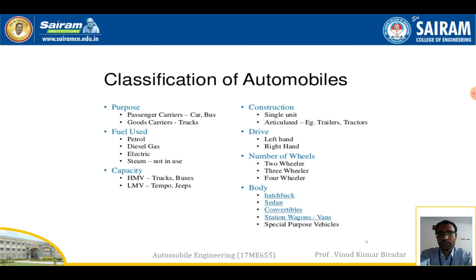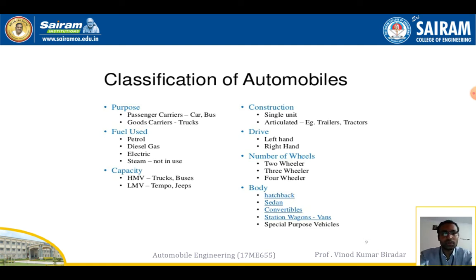The second classification is based on fuel used: petrol engine, diesel engine, electric, and steam engine. Based on capacity: heavy vehicles and light vehicles — trucks, buses, tempo, jeeps. Based on construction: single unit or trailer tractors. Based on drive: left-hand or right-hand drive. Based on number of wheels: two-wheel, three-wheel, four-wheel.